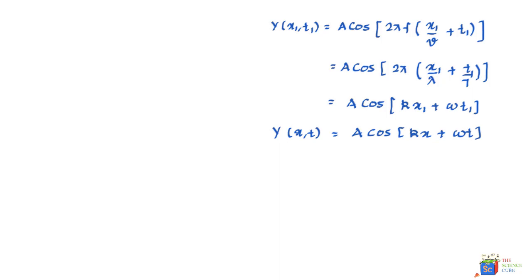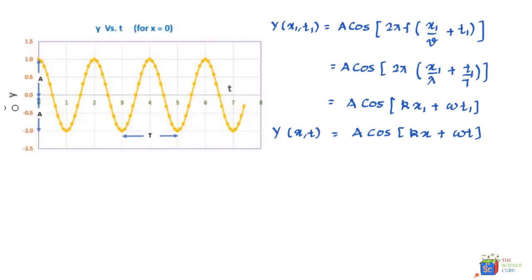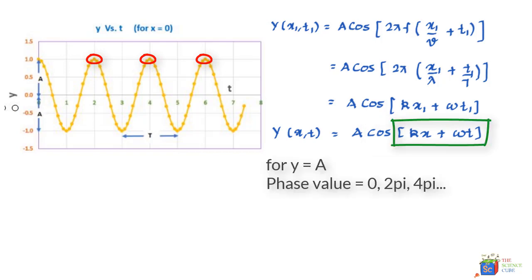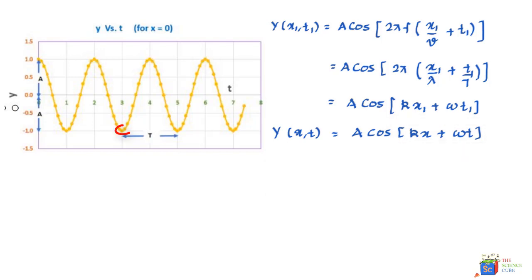And this phase value for some x and t value determines the part of the sinusoidal wave that may be occurring at a particular point and time, and probably that's the reason it's called the phase. You may also like to note that all crests where y is equal to A—cosine function has a value one—the phase value therefore could be zero, 2π, 4π and so on, because only multiples of 2π can give cos value of one. And for a trough where y value is minus A, cosine value has to be minus one, and therefore the phase value needs to be π, 3π, 5π and so on.